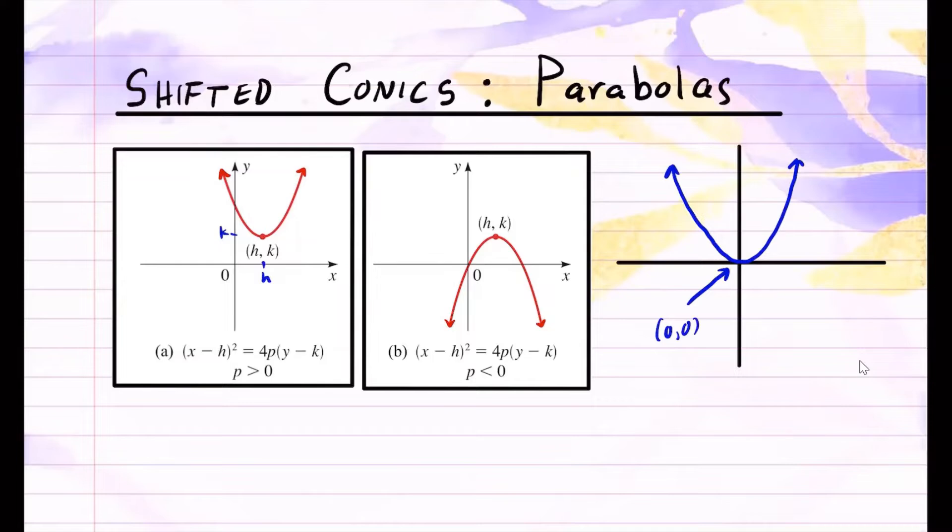So in that case, here you have x squared is equal to 4py, but now with the shift, we have this form. What you see here is the horizontal shift, and what you see up here is the vertical shift. So the vertex for this parabola is now going to be h, k.